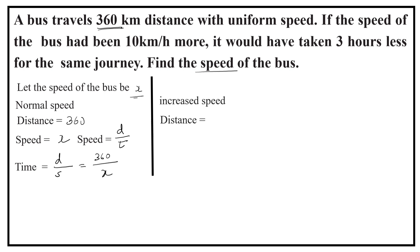Distance traveled is same for the increased speed, that is 360 km. Here, speed is increased by 10 km per hour. So, speed is equal to x plus 10. So, time is equal to 360 by x plus 10. With the increased speed,